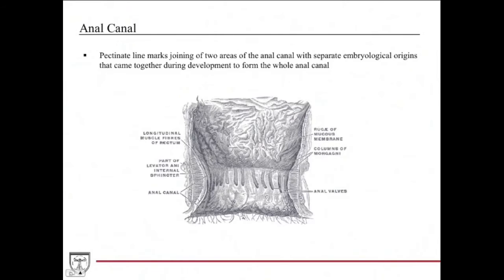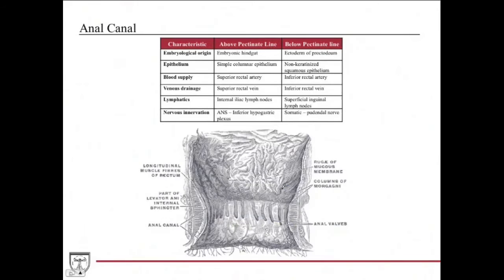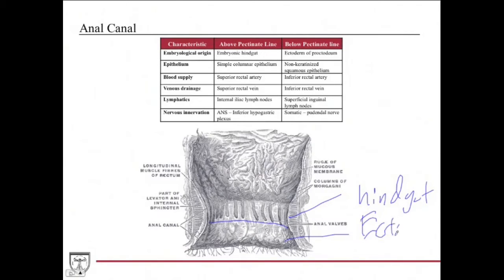The pectinate line marks an area formed during development where above and below have separate embryological origins that fuse together to form the entire anal canal. Above the pectinate line, the embryological origin is the hindgut. Below the pectinate line, it's the ectoderm — specifically the ectoderm of the proctodeum. So two different embryological origins.